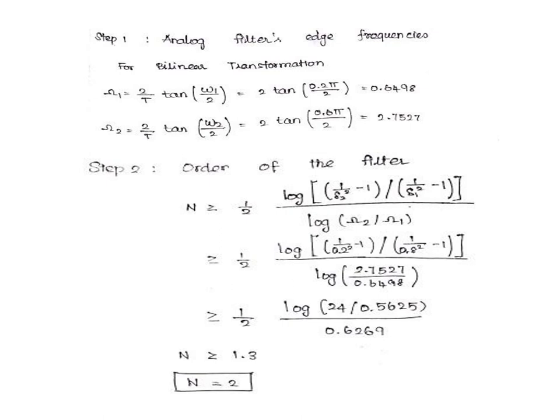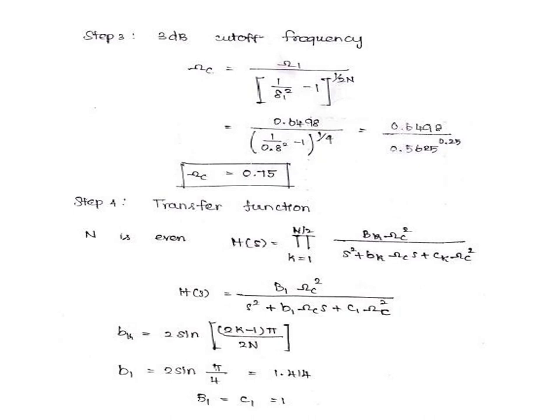Step 2: Order of the filter. N is always greater than or equal to log[√((10^(0.1αs) - 1)/(10^(0.1αp) - 1))] divided by log(Ωs/Ωp). We are going to substitute all the values. We get N ≥ 1.3. The formula itself says that N is always greater than 1.3, so we are going to substitute N = 2.